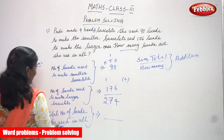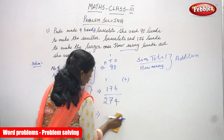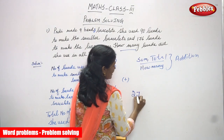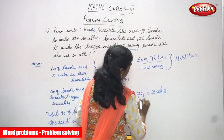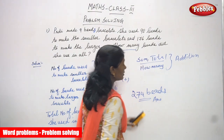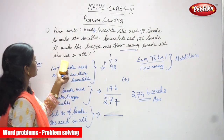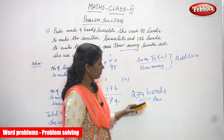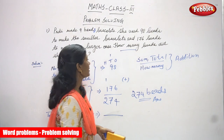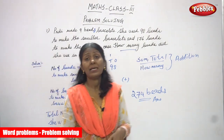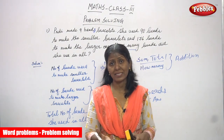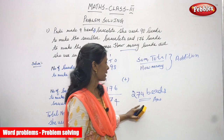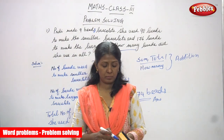The answer is 274. That means the total number of beads she used in all is 274 beads. She used 274 beads to make both the smaller bracelet and the larger bracelet. How many beads did she use in all? The total number of beads is 274. This is the right answer.